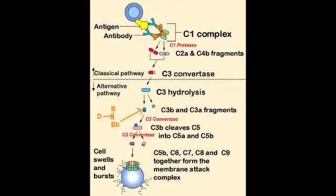What is C3 deficiency? C3 is normally very abundant in the plasma and is used in both the alternative and classic pathways. So if you're deficient in C3, this will lead to a lot of problems downstream in the formation of the membrane attack complex, resulting in severe recurrent pyogenic sinus and respiratory tract infections. Deficiency of C3 will also increase the susceptibility to type 3 hypersensitivity reactions.